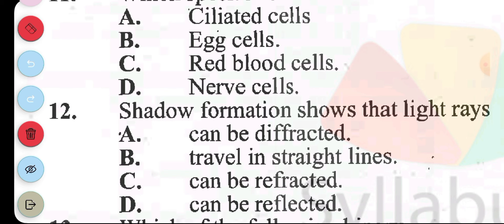Question 12: shadow formation shows that light rays A, can be refracted. B, travel in straight lines. C, can be refracted. D, can be reflected. The answer to question 12 is B, traveling straight lines.